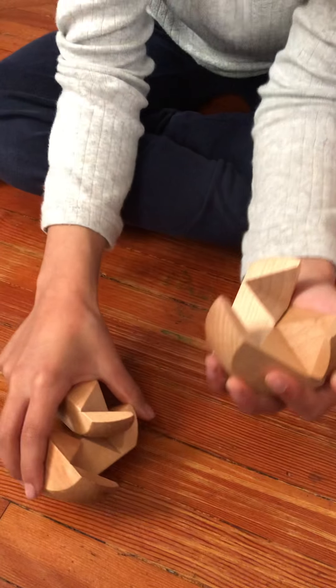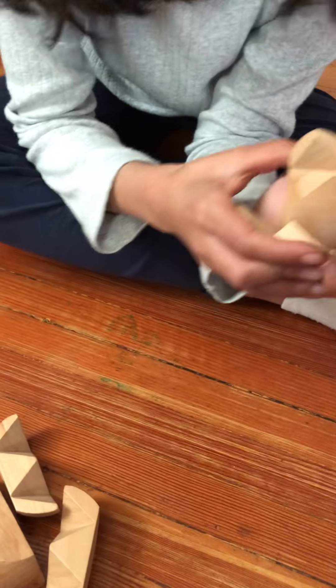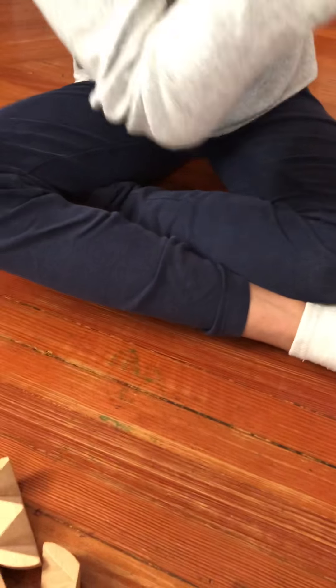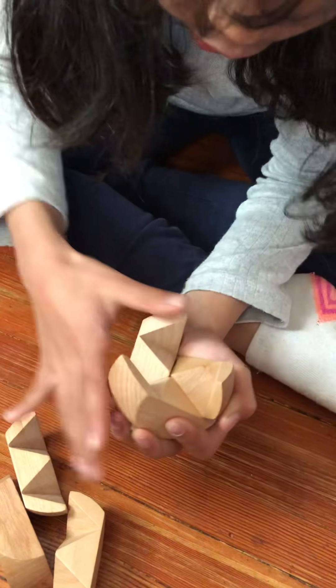And also, when you make it, if you put one on this side, the next time you build it, don't put it on this side. You put it on this side. So when you place them together, it'll become a ball. Let's do that again.